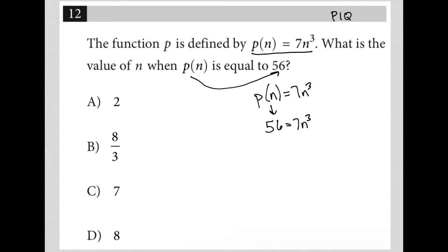My first step is to divide both sides by 7. I'm left with 8 = n³, and either I just know that answer is 2 because 2³, which equals 2 × 2 × 2, is equal to 8. So I'd have my answer right away, choice A.